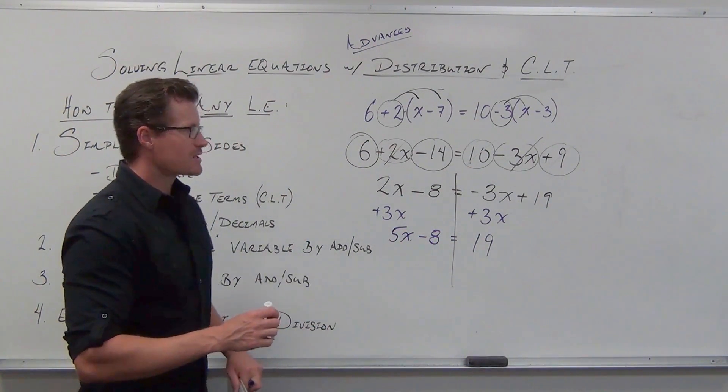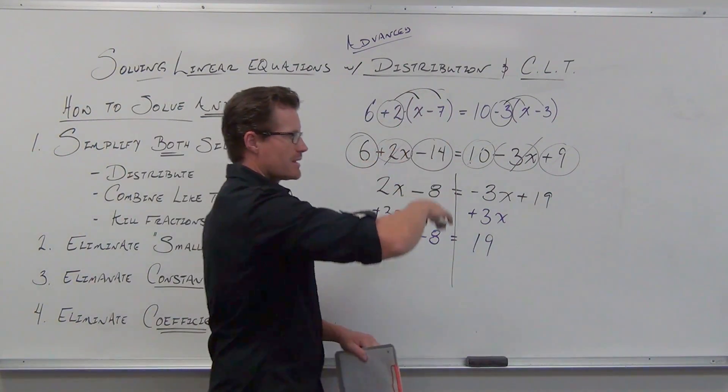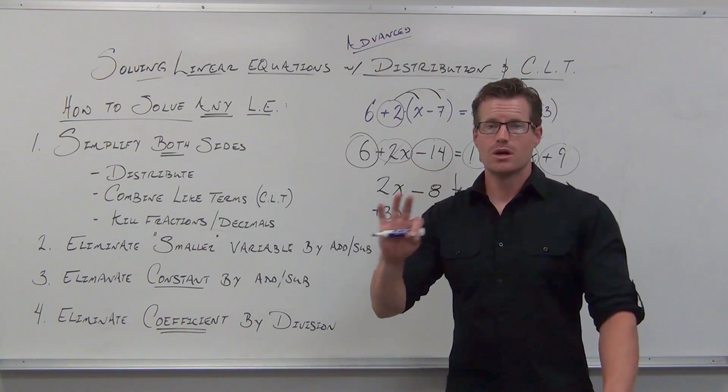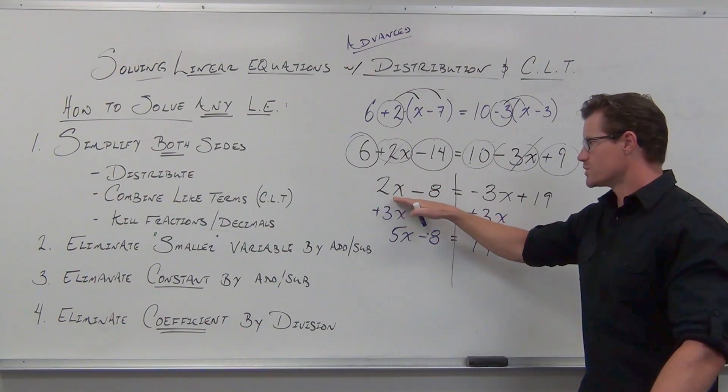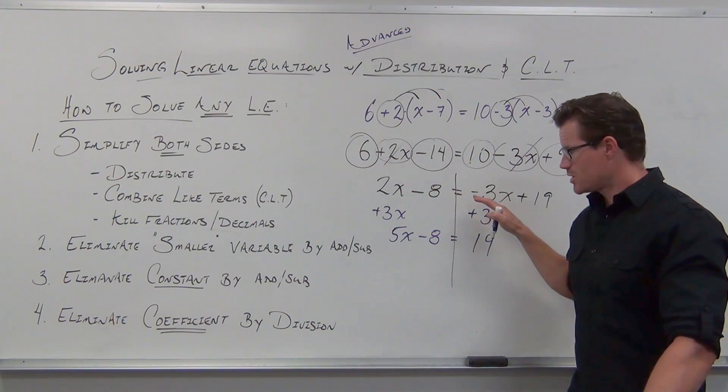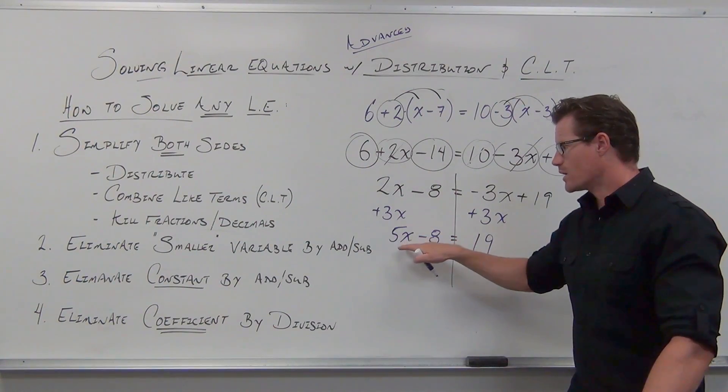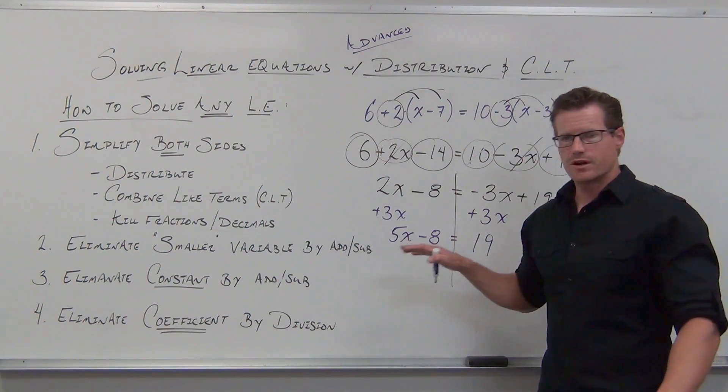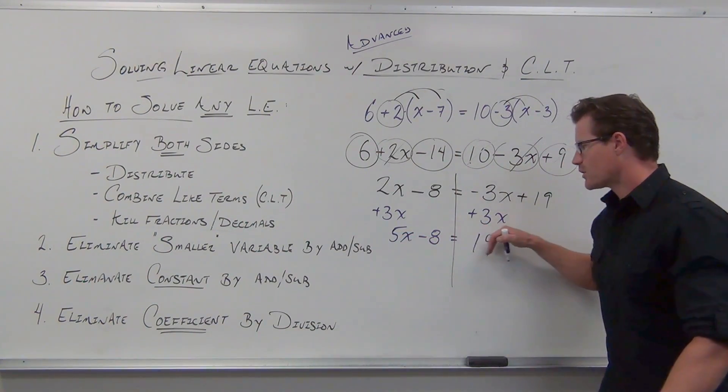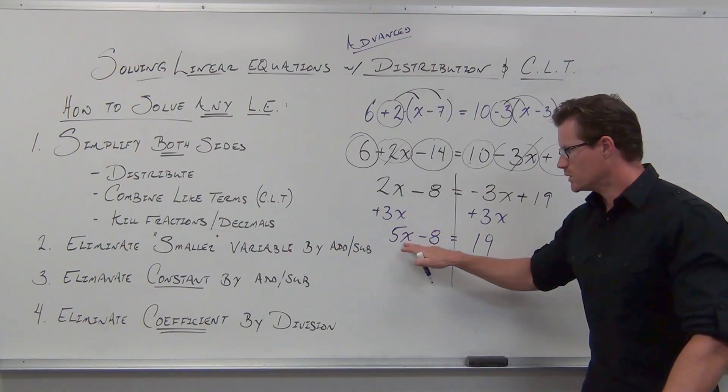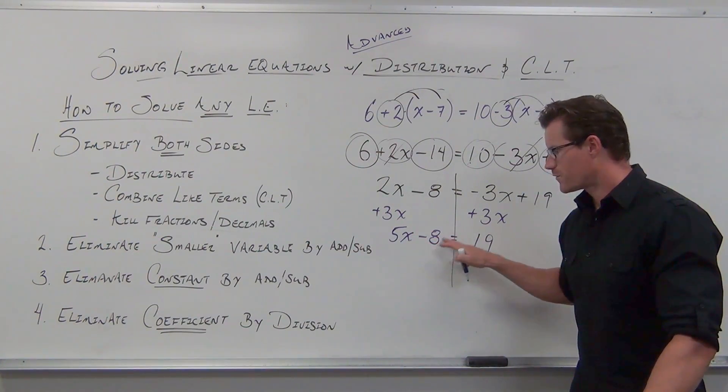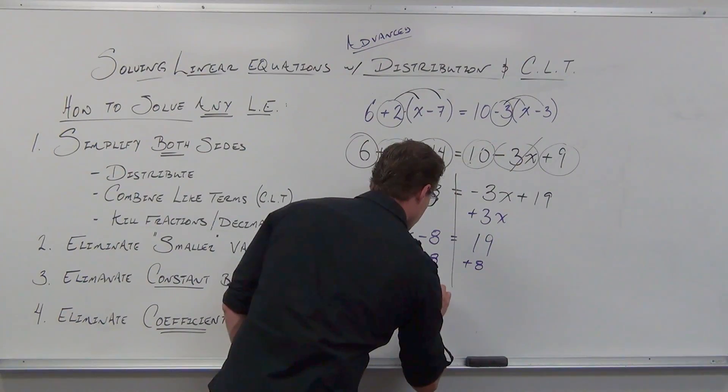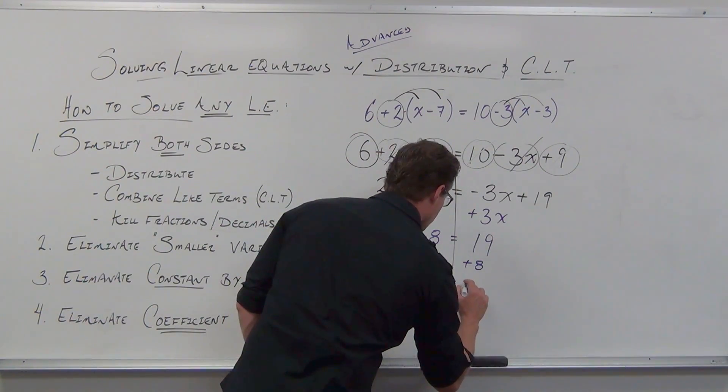And you're pretty much home free. At this point, since we've distributed, we've combined like terms, we've gotten rid of our smaller variable, you should have at most three terms. After you get rid of one of your variables, you have at most three terms. One with a variable and a constant, and one with just a constant. Please notice something. Your variable side always drives your problem. You only look at your variable, you get rid of your constant first. We're going to add 8.